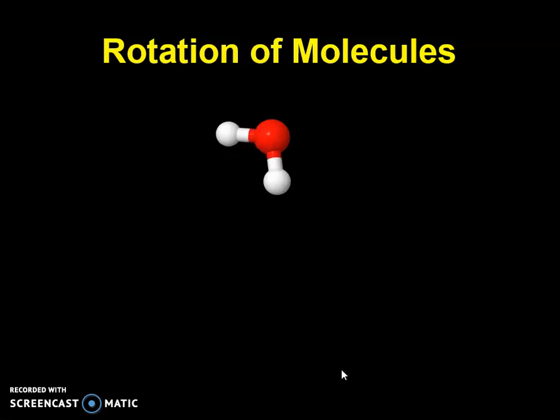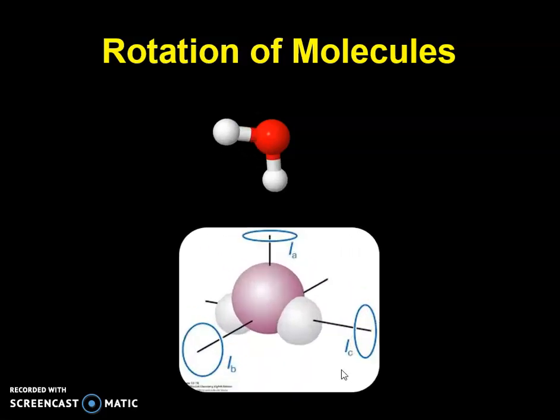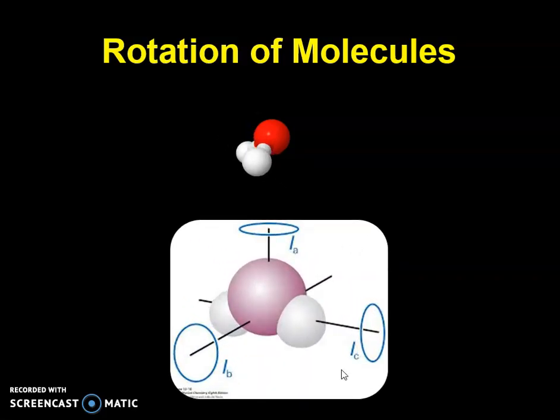The rotation of a three-dimensional body is quite complex and it is convenient to resolve it into rotational components about three mutually perpendicular directions through the center of gravity. The center of gravity is the principal axis of rotation.